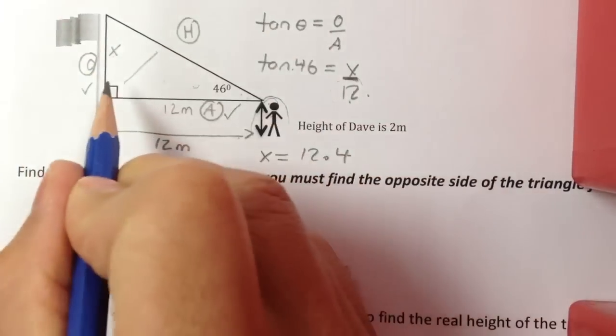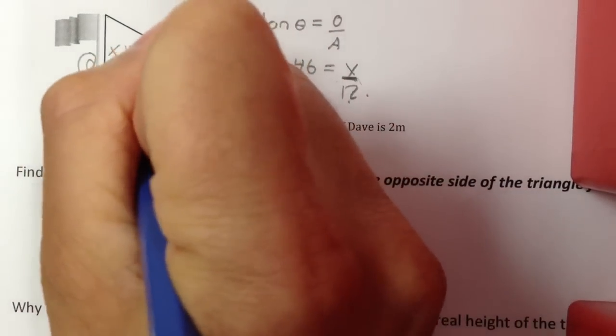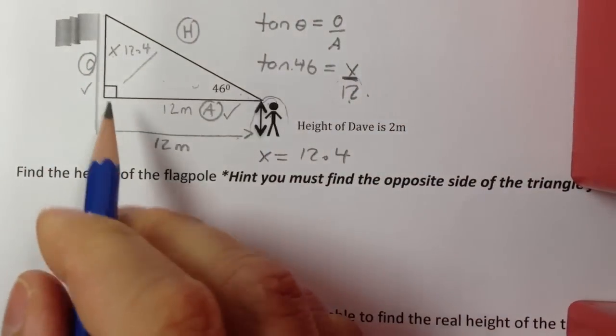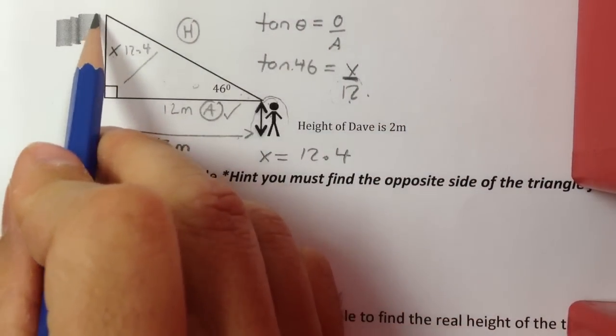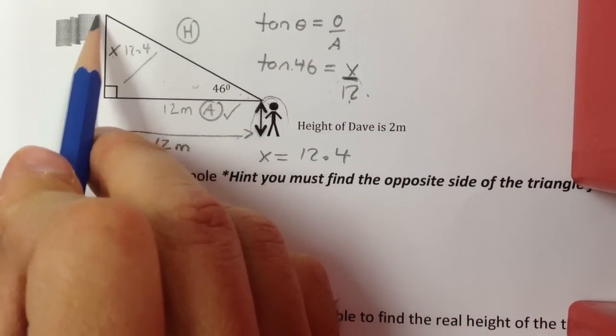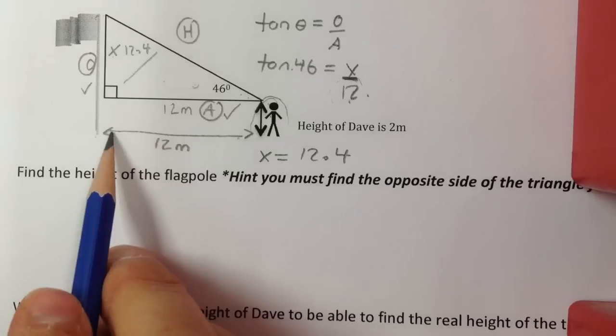So that means the height of the triangle is 12.4. Okay, it doesn't mean that's the height of the whole flagpole. Because remember the whole flagpole is from here all the way down to the bottom of the guy's feet.